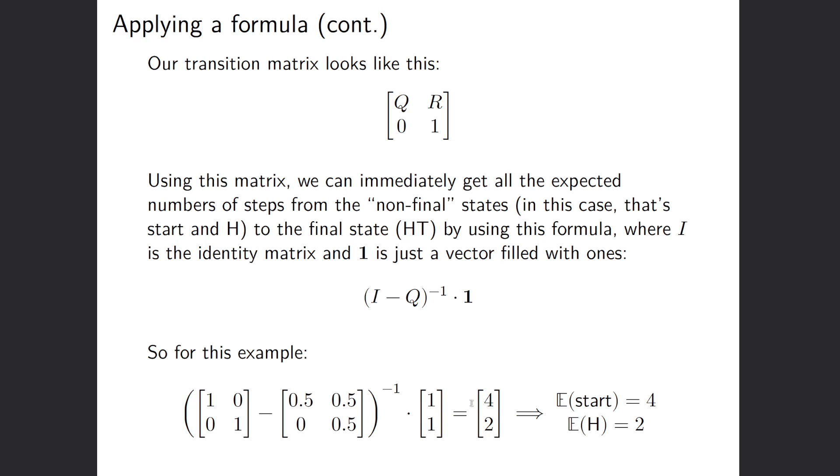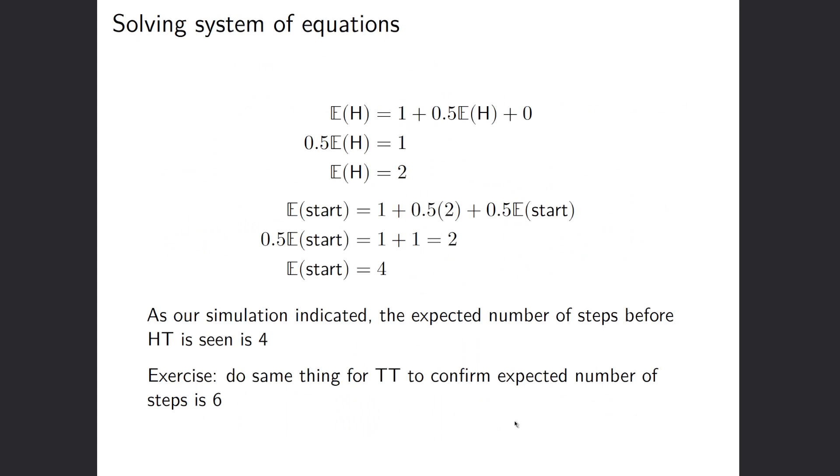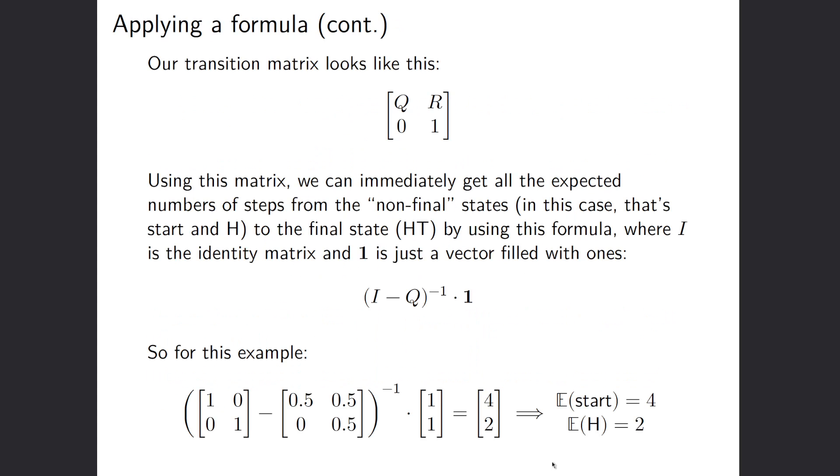So we multiply that out and we get 4, 2, which means that the expected number of steps from the start is 4, and the expected number of steps from the h state is 2. So we didn't actually get this before, or I guess we did get it as a consequence of the way that we solved the equations, but it's nice to have it all here and we don't need to solve any equations for this.